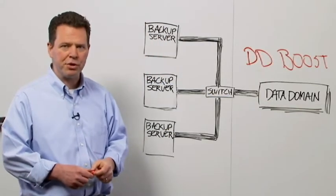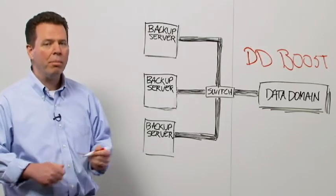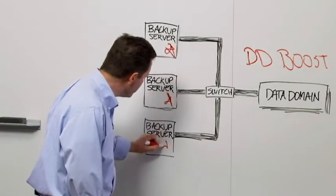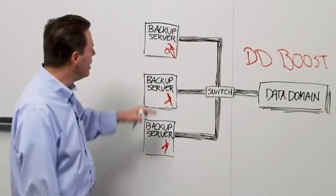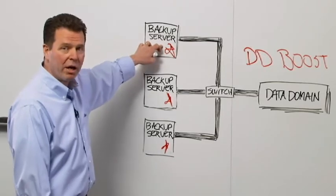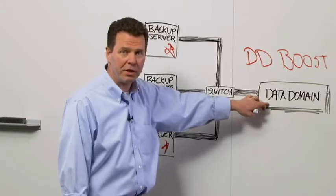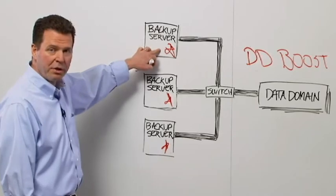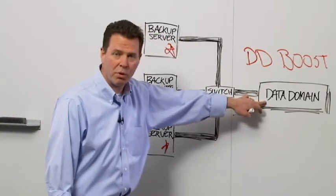DD Boost changes this equation substantially. What we've done is distribute parts of the deduplication process to our backup servers. The way a backup works with DD Boost is that segments are identified on the backup server. The backup server communicates with the Data Domain system to see if the segment is unique. If the segment is unique, it's compressed on the backup server and then sent to the Data Domain system where it's stored.